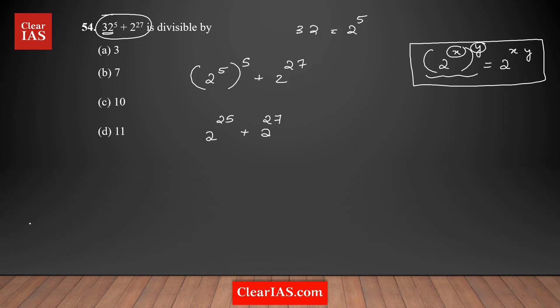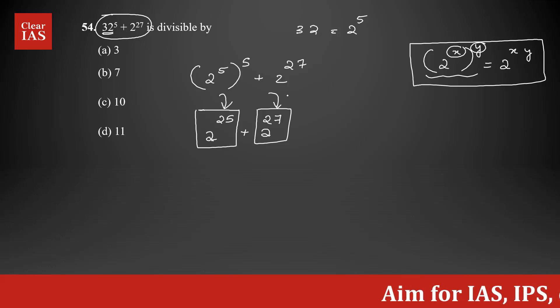Now I'm going to take the common terms outside. In the first term, 2 is multiplied by itself 25 times—there are 25 twos. In the second term, 2 is multiplied by itself 27 times—there are 27 twos. How many twos are common in both terms? You can say 25 twos are common.